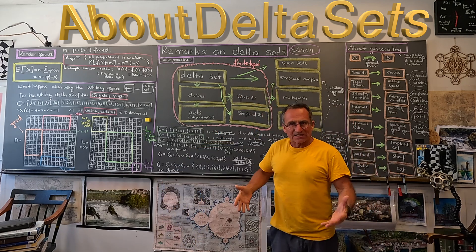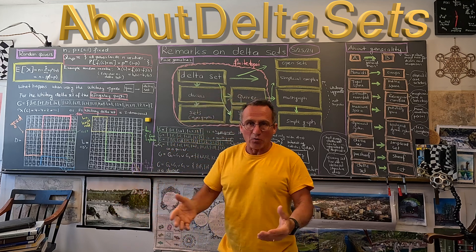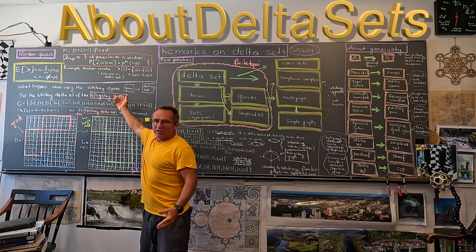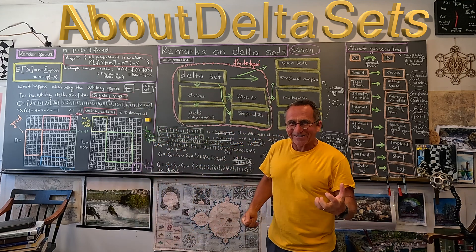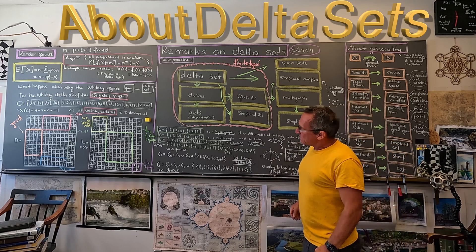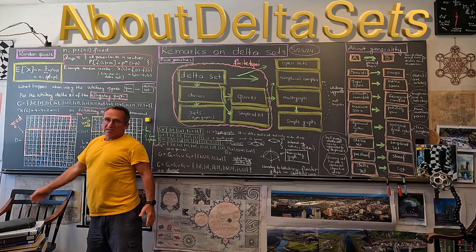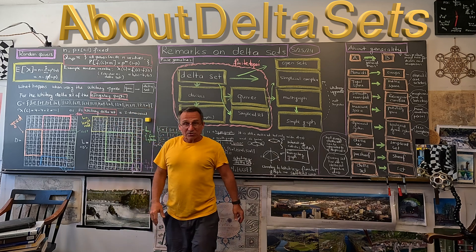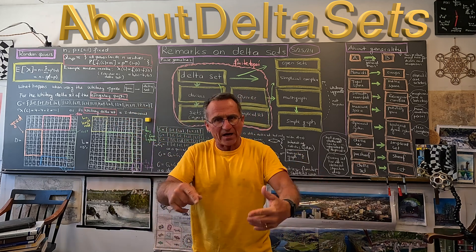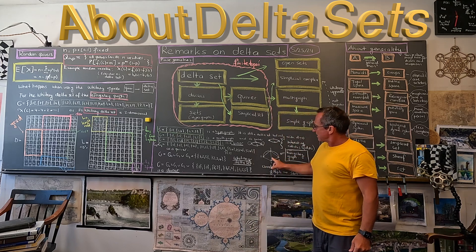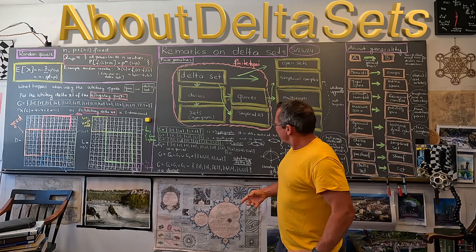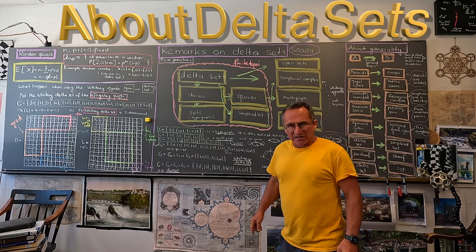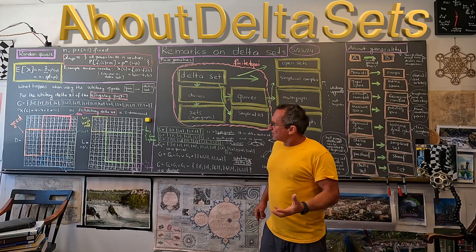What I like very much about delta sets is that they produce the calculus we know, just in a finite setting. Looking at the Königsberg graph — historically the most famous graph — I wrote it down as a delta set. There are zero-dimensional parts, a one-dimensional part, and I also included a two-dimensional part: the triangles. There are two triangles, which we don't want to leave out. We think about this as a two-dimensional mathematical structure.